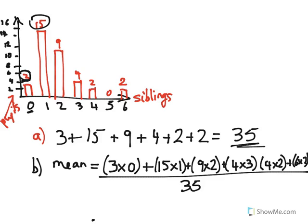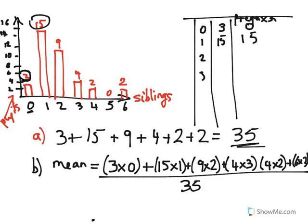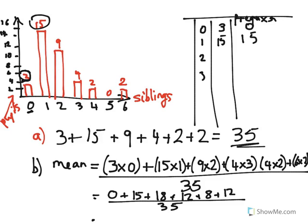If we wrote this as a frequency table, we'd have a column for number of siblings (0, 1, 2, 3...), a frequency column, and a frequency-times-siblings column. We don't need the table here, but it can help. Adding the products: zero plus fifteen plus eighteen plus twelve plus eight plus twelve, then dividing by 35, gives us 65 divided by 35.